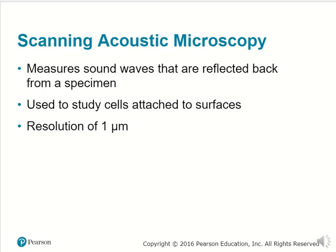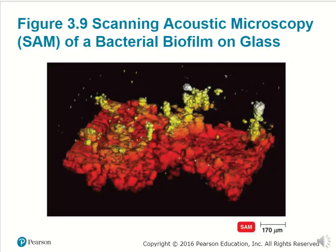Scanning acoustic microscopy simply involves sound waves, which bounce off of a specimen and help us look at surfaces of a cell. They give a resolution around one micrometer. Using scanning or sound waves, it is really good at interpreting the surface of a cell.